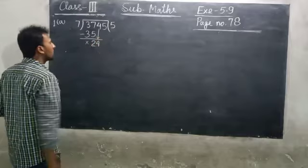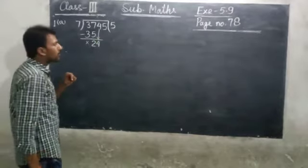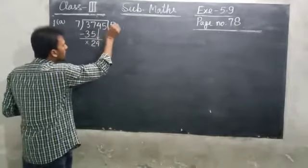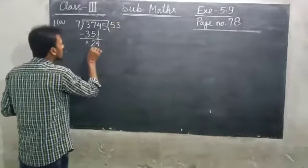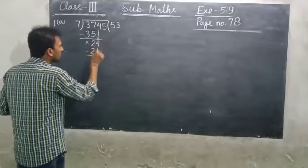7 into 24 is? 3 times. 7 times 3 is 21. 24 minus 21 equals 3. Bring down 5.